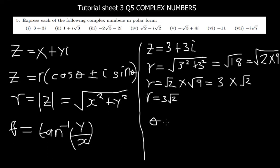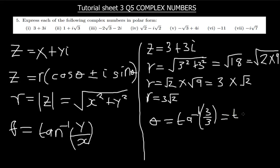Now we find θ. θ = tan⁻¹(y/x). My y is 3 and my x is also 3, so I put 3 over 3. That is tan⁻¹(1), since 3 over 3 equals 1. So θ = tan⁻¹(1) = 45 degrees.